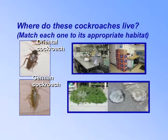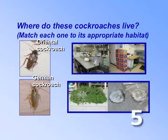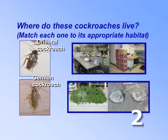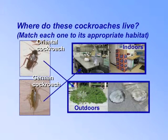Where do these cockroaches live? Oriental cockroaches live outdoors in dark, wet places, such as ground covers or water meter boxes. German cockroaches live indoors and are found in kitchens, storage areas, or classrooms, often near water sources.